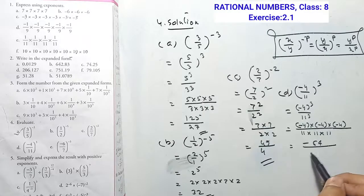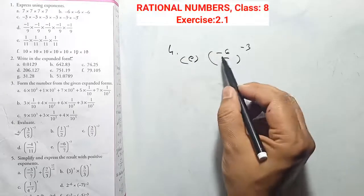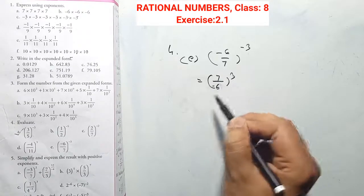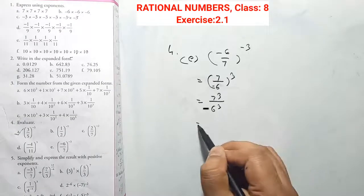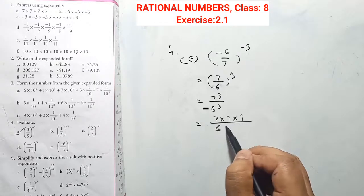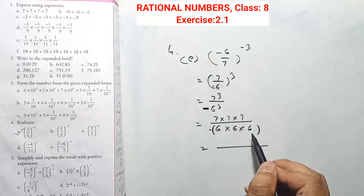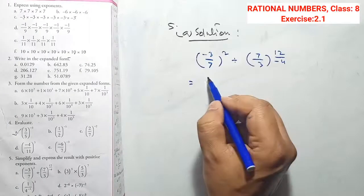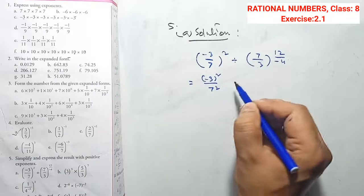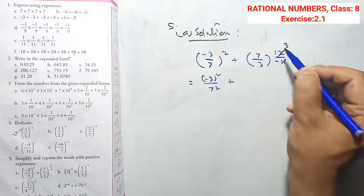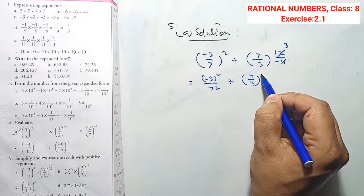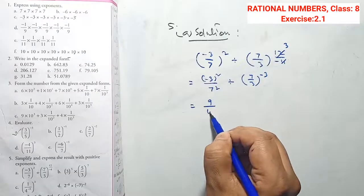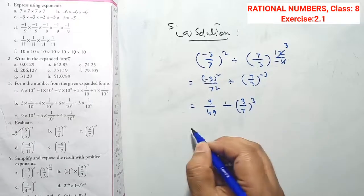Answer for (−4/11)³ is −64/1331. For (−6/7) to the power minus 3: we can write it as (7/6) power 3. So 7 power 3 = 7×7×7 = 343, and 6 power 3 = 6×6×6 = 216. Answer is 343/216. Next: (3/7)² ÷ (3/7)³ — cancel 3/7 three times, giving (7/3) to the minus 3. Then 3 squared = 9, 7 squared = 49, so 9/49.